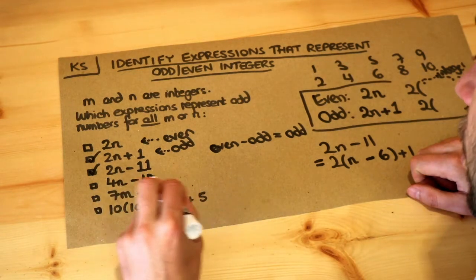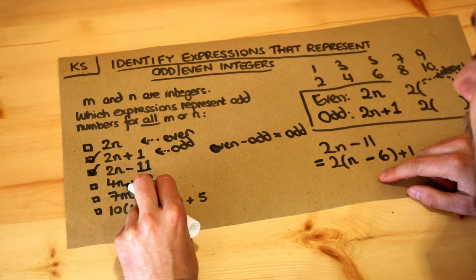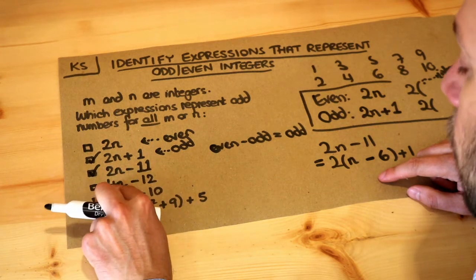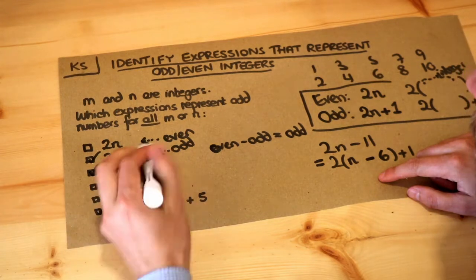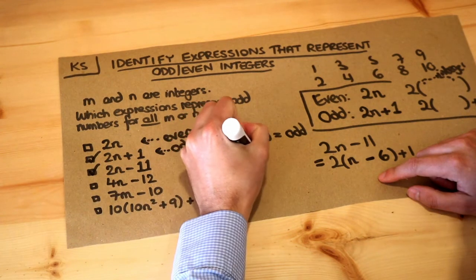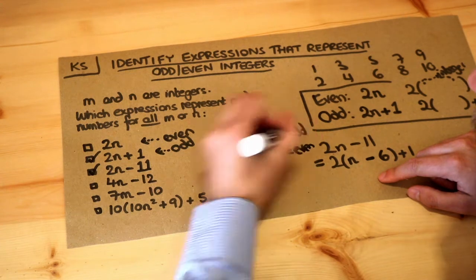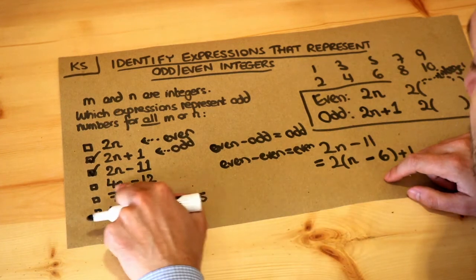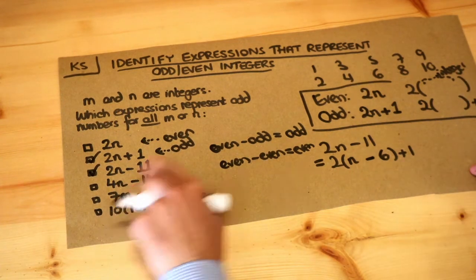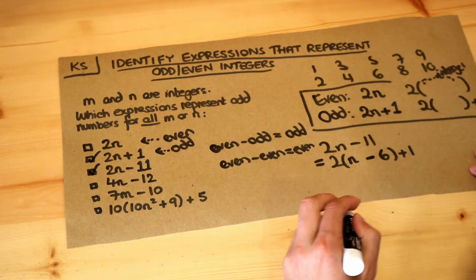What about 4n minus 12? Well, to think about this in a simple way, 4n is guaranteed to be even because 4 times anything is going to be an even number, and even minus even is definitely going to be an even number. So this one is definitely not odd, and the way more explicitly we could show that it's even is to put it in this form. So 2 times an integer we can guarantee it's even.